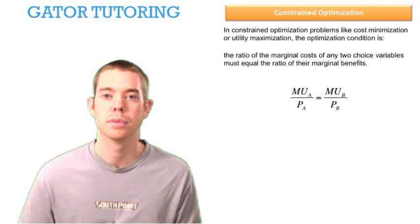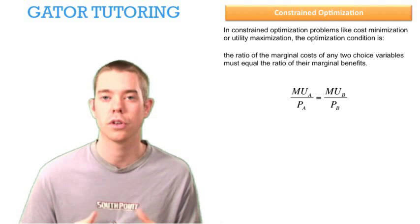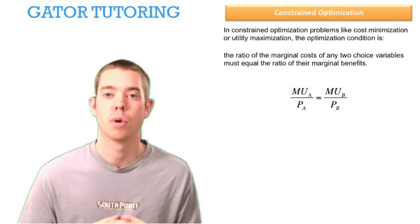Remember, the optimization condition was this, which we called equal bang for buck. It said the marginal utility of A divided by the price of A must be set equal to the marginal utility of B divided by the price of B.